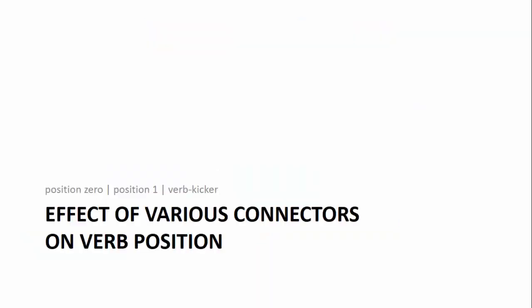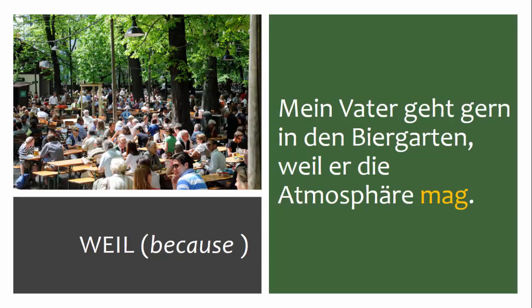Now let's look at how these connectors affect the position of the verb. Remember that the conjugated verb in any clause is typically the second element. There's a video in the playlist about standard word order if you need a refresher. If you use a connector, however, the conjugated verb may not be the second element.